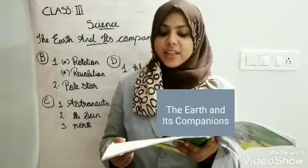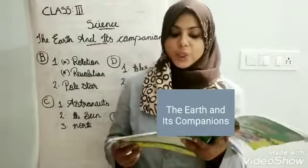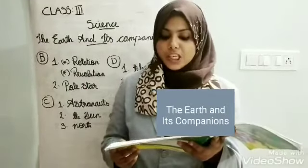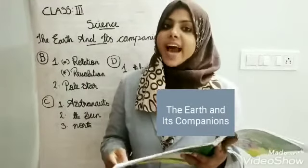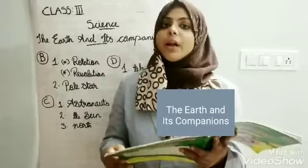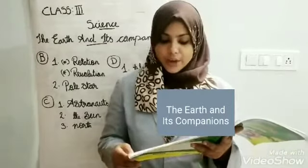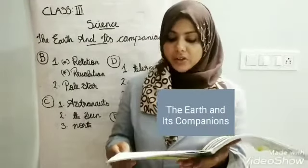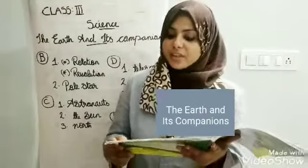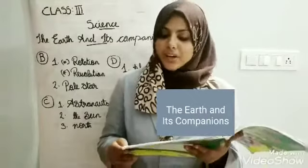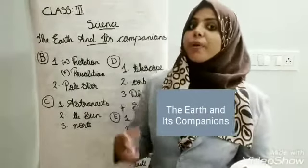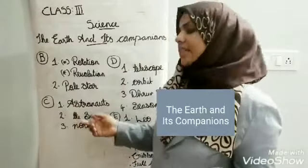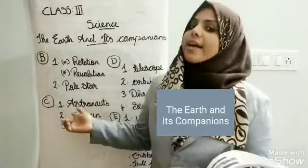Section C: pick the correct options. First question: people who go into space are called — Option A: doctors, Option B: engineers, Option C: astronauts. We know people who go into space are called astronauts, so the right answer is astronauts.